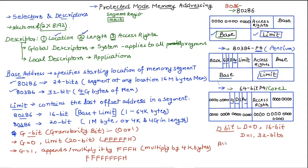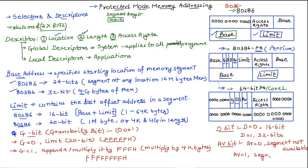The next bit is the AV bit, which is an important bit because it specifies whether the segment is available or not. If one program is accessing a particular segment and another program tries to access it, the microprocessor will set the AV bit to 0, meaning the segment is not available. When AV equals 1, the segment is available, and a program can access it.